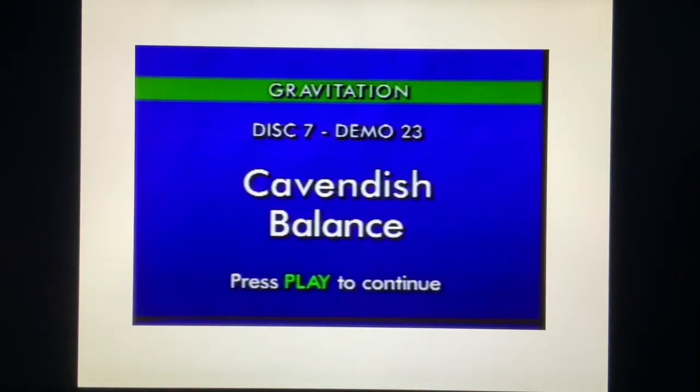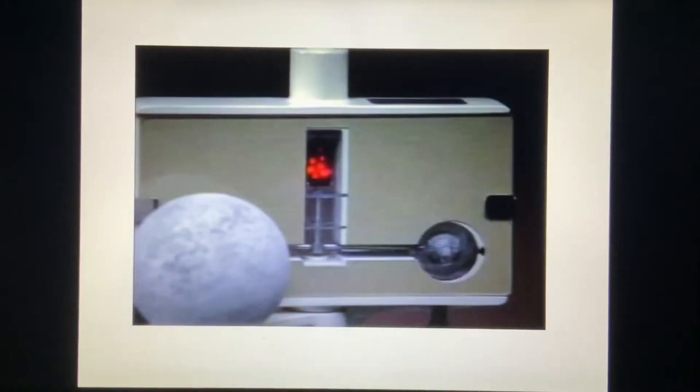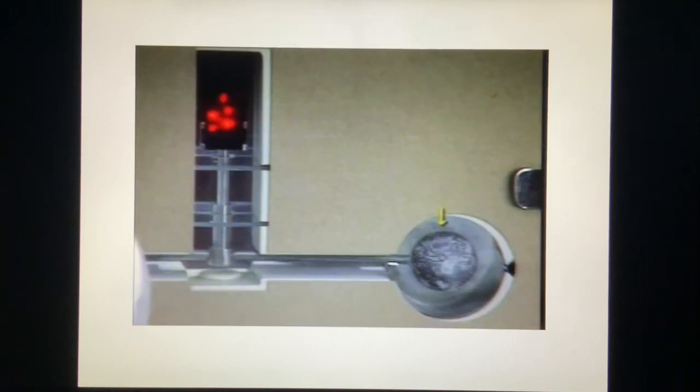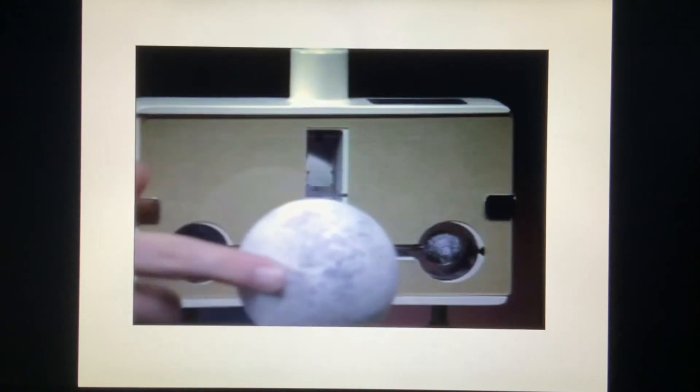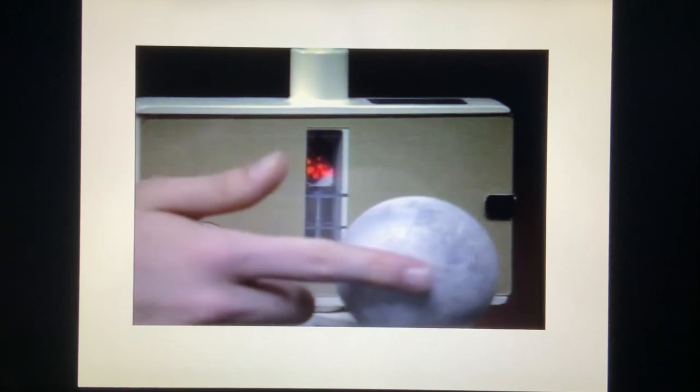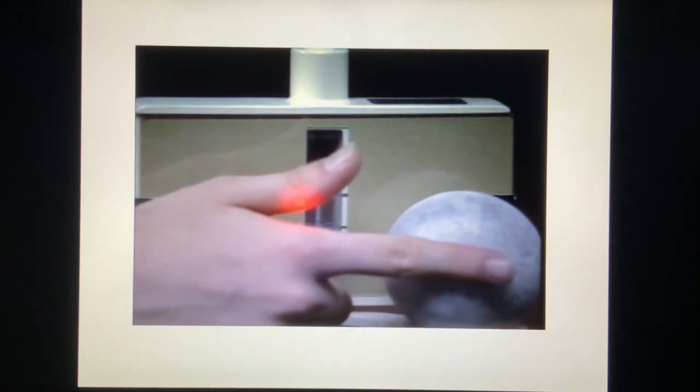Cavendish balance. This device, known as a Cavendish balance, can be used to measure the universal gravitational constant. Inside the balance, two small lead spheres are attached to the end of a light bar suspended from a very fine wire. Two large lead spheres outside the balance can be rotated to either of two positions.